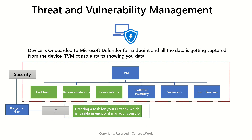The fourth one is software inventory — again, the list of all the software installed on a particular device with valid CPE, because for software for which CPEs are not defined or do not exist, vulnerabilities are typically not defined for them either. We will talk about this in a lot more detail when we specifically cover software inventory. The fifth one is weaknesses — a list of all the CVEs based on the inventory captured from the onboarded devices.